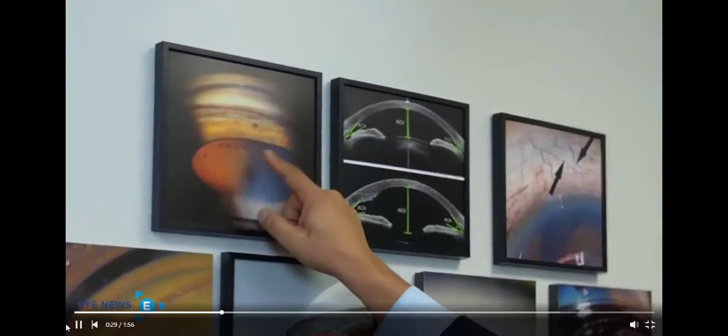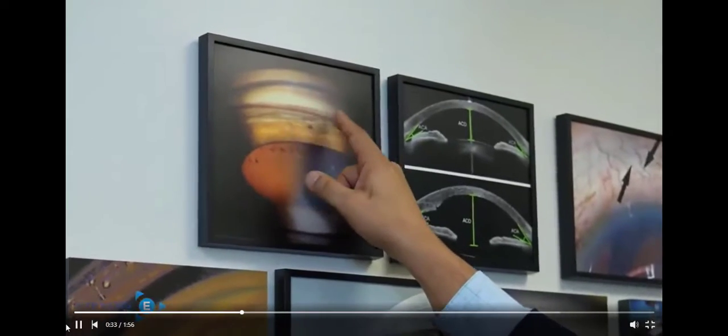Here's an iris. Here's a large lens. Here's pigment that's being rubbed off and blocking the drainage angle over here.